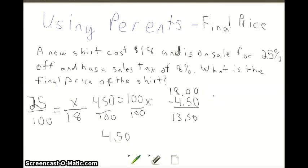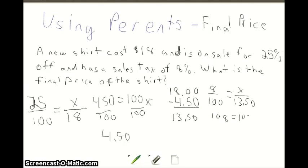Now we need to take that $13.50 and find out how much the sales tax is. We set up another proportion: 8 over 100 equals x over 13.50. We do 8 times 1350 to get 10800, then divide by 100.